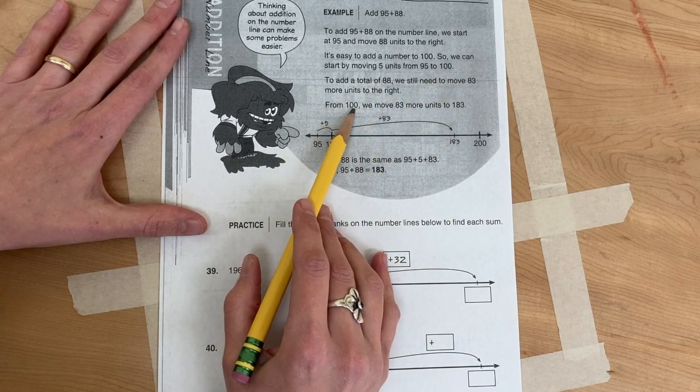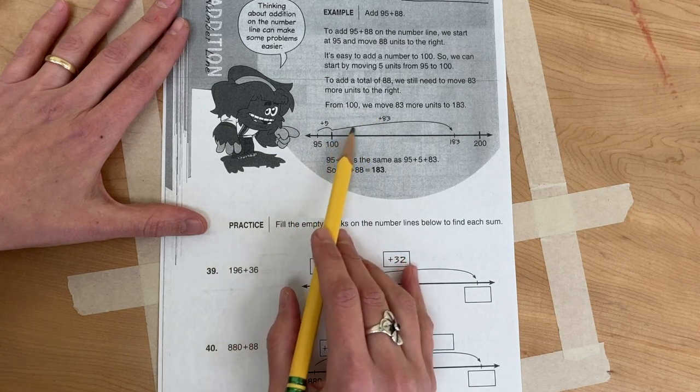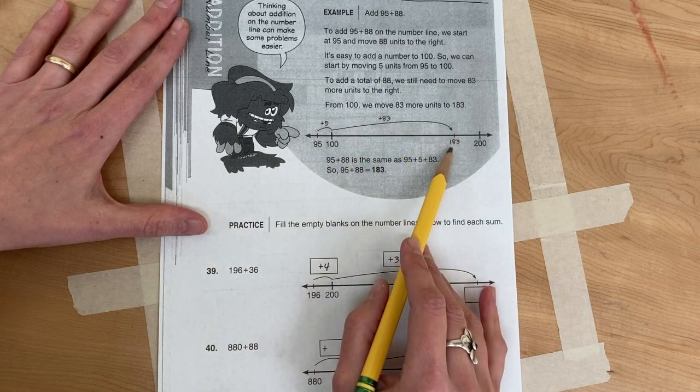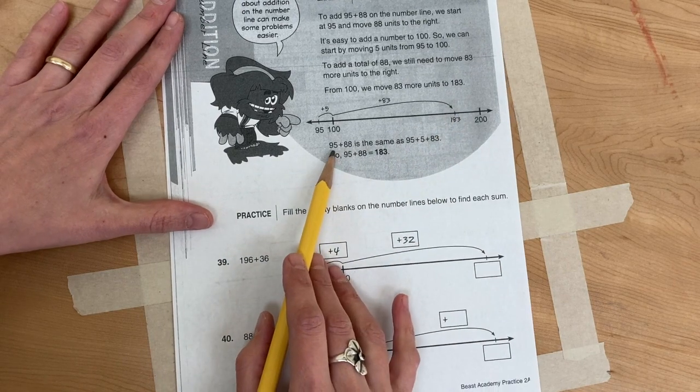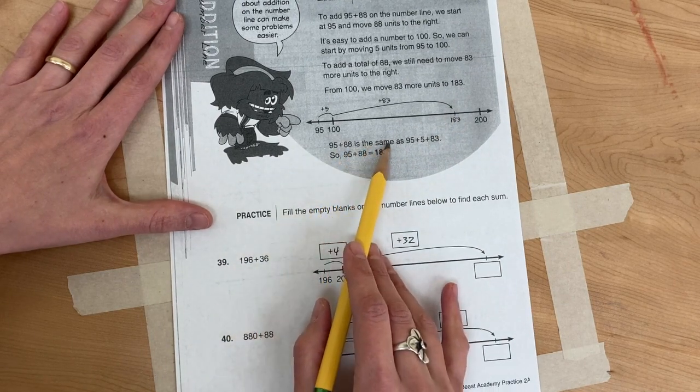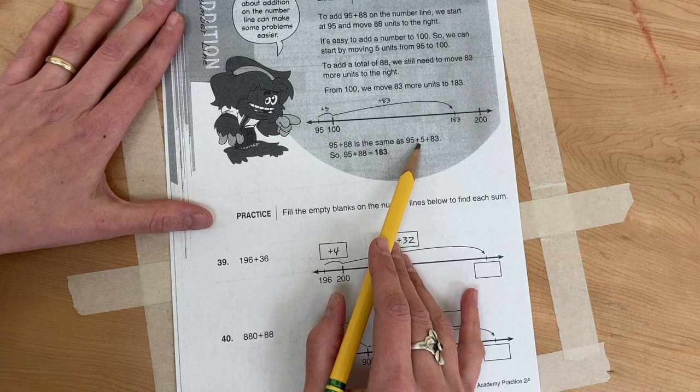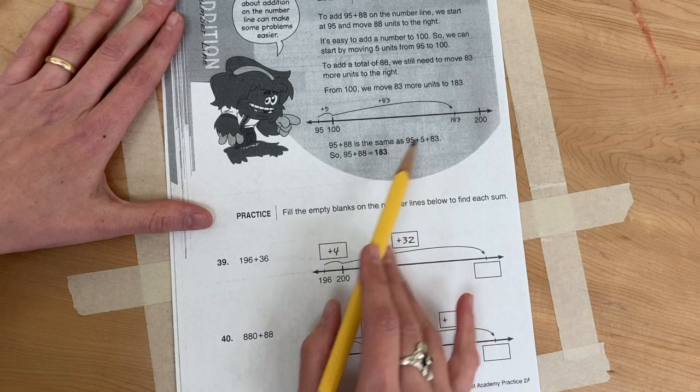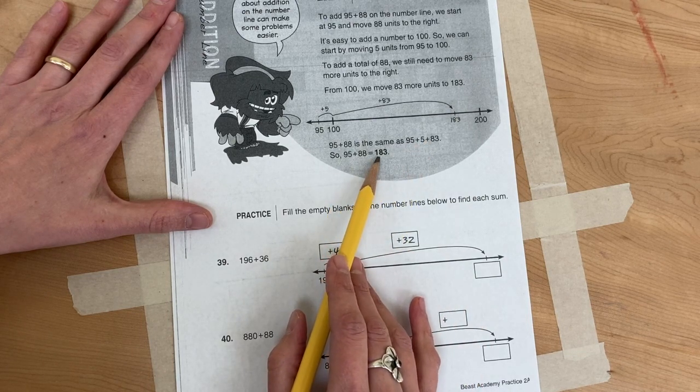From 100, we move 83 more units to 183. 95 plus 88 is the same as 95 plus 5 plus 83. So 95 plus 88 is 183.